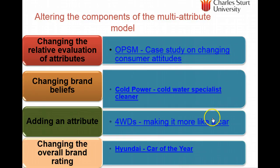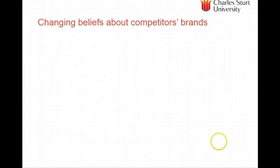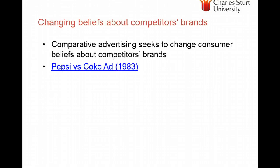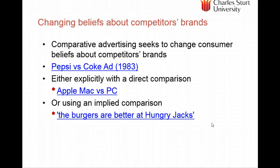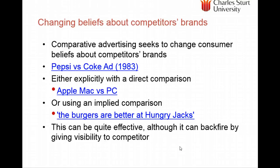These advertising examples show changing attitudes according to the multi-attribute model. You can also try to influence beliefs about competitors' brands — though this is quite tricky. Examples include Pepsi versus Coke in 1993, a direct comparison with Apple Mac versus a personal computer, or by implied comparison, 'the burgers are better than Hungry Jack's' from the 1970s. However, this can backfire by giving visibility to the competitor's brand, and if someone is already brand loyal, involvement theory tells us it can actually strengthen their existing beliefs.